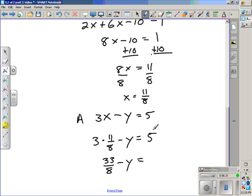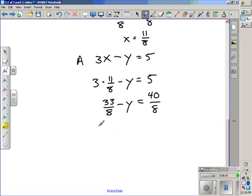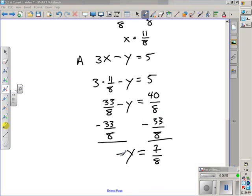Now I'm going to do something here. I'm going to rewrite 5 with a denominator of 8, which would give us 40/8. Subtracting 33/8 from both sides, giving us -y = 7/8. And then multiplying both sides by negative 1 so we have the positive variable, y = -7/8.